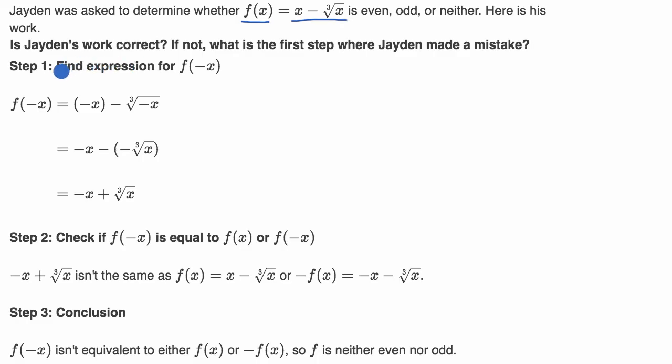So let's see, the first thing that Jaden did is he's trying to figure out what is f(-x). Because remember, if f(-x) is equal to f(x), we are even, and if f(-x) is equal to -f(x), then we are odd. So it makes sense for him to find the expression for f(-x).